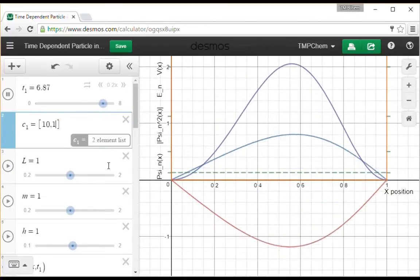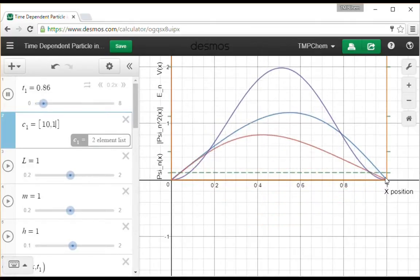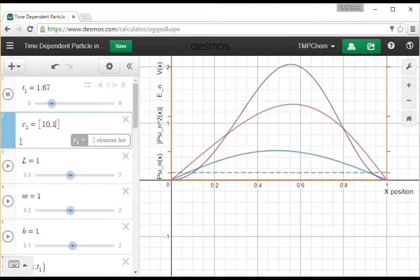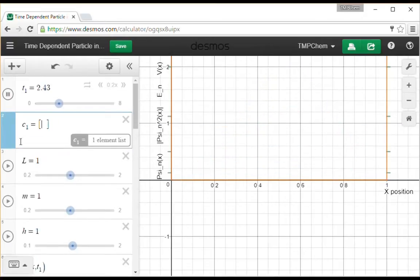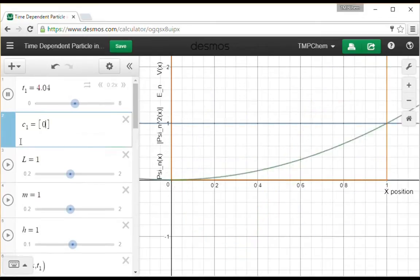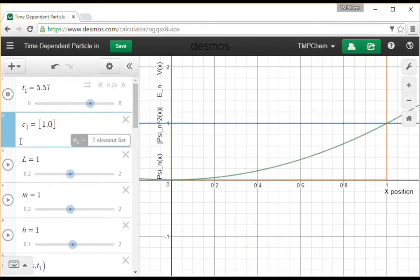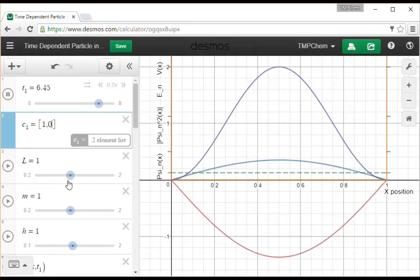So I can represent any function that obeys these boundary conditions of psi 0 equals 0 and psi L equals 0 as long as I use these coefficients properly. Okay, so that's what I get for my stationary states and mixtures.